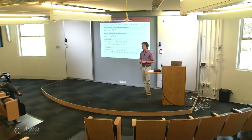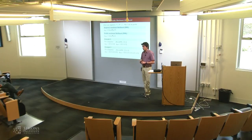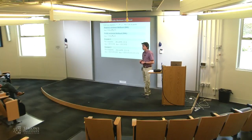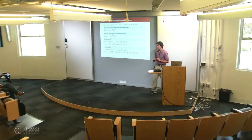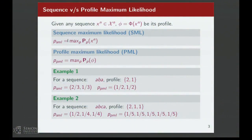Consider if you drew a sample of 100 and 99 happened to be one element and one was another element — the uniform distribution on two elements is not going to be your profile maximum likelihood. These small examples give the wrong intuition. It does matter how large the numbers are. If your profile has very large numbers, you're not going to get a uniform distribution.